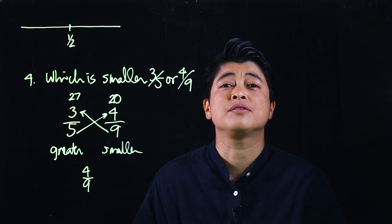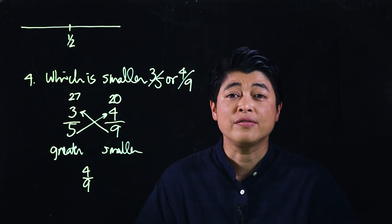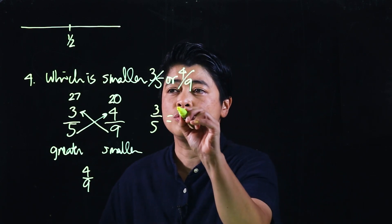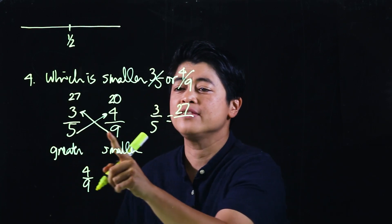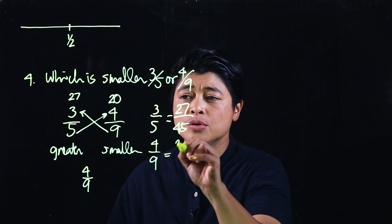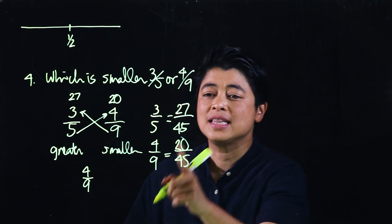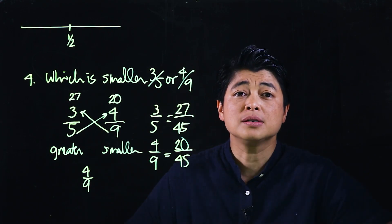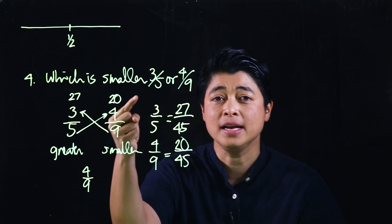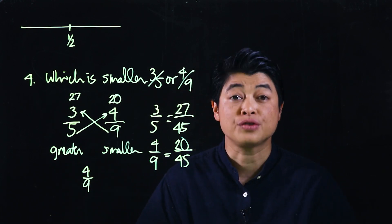Parents will ask: will the kids be graded the same way using this method? In theory, what they're doing is finding equivalent fractions. Three-fifths is technically equivalent to 27 over 45, and four-ninths is technically equivalent to 20 over 45. So this is the smaller — we just don't show all the work. If the kids don't need to show the work, this cross-multiplication method is the way to go, so the kids won't be stressed.